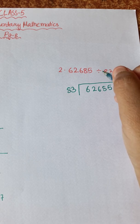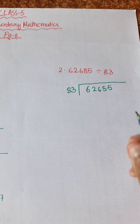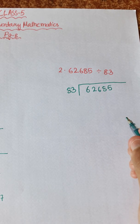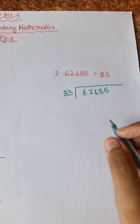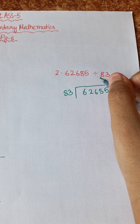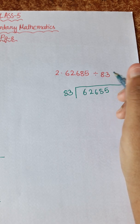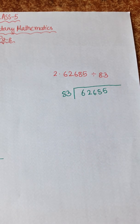Let's go through the 83 times table: 81 is 80, 82 is 160, 83 is 240, 84 is 320, 85 is 486, 86 is 480, 87 is 560, 88 is 640. So 83 sevens are 560 and 83 eights are 640.